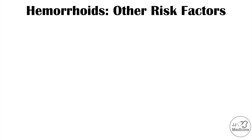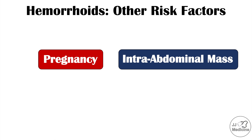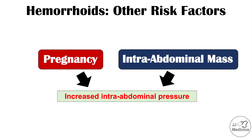For completeness, two additional risk factors worth mentioning are pregnancy and intra-abdominal masses. If there is a space-occupying lesion within the abdomen, this can also lead to issues with hemorrhoids. As many of you have probably already guessed, the reason is again increased intra-abdominal pressure. For more information on foods and beverages to avoid if you have hemorrhoids, please check out that lesson.